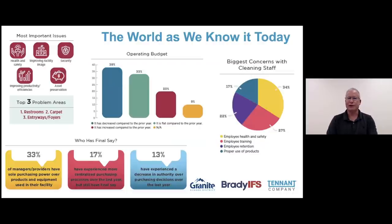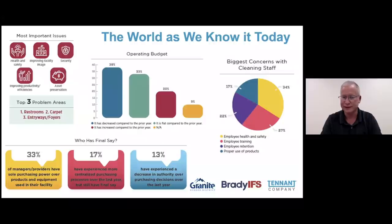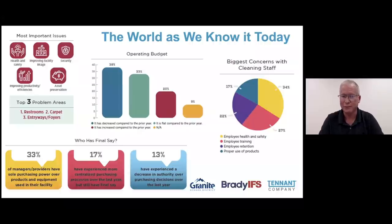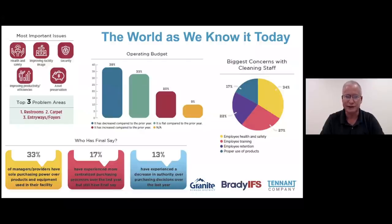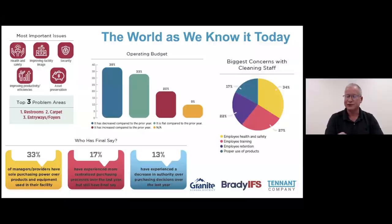I want to cover just a few points before we get to our panelists today. I title this 'The World As We Know It' and I think you might agree that some of these numbers you see here, you see these issues with your own facilities. If you look at the top left of your screen, we see some important issues — health and safety, improving facility image, security, and so on. Notice the top three problem areas: restrooms, carpet, entryways, and foyers. Those are the heavily soiled areas and the ones people see and use the most.